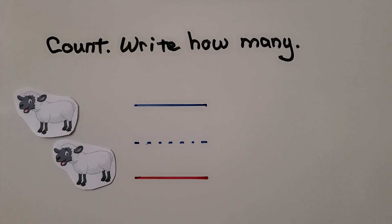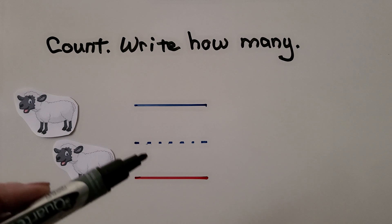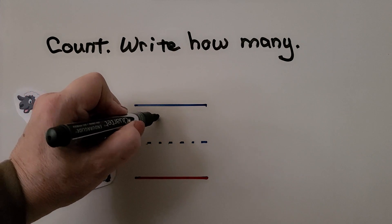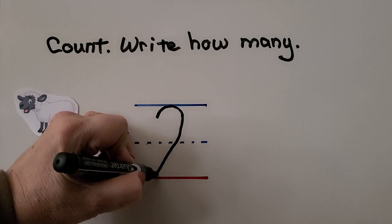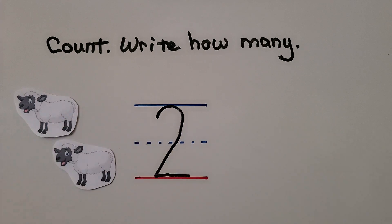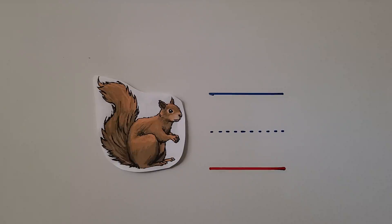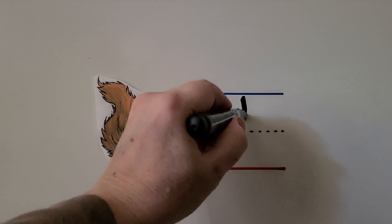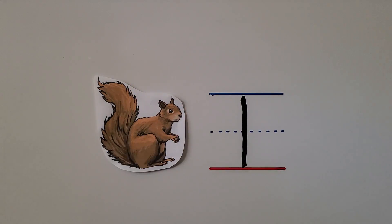We need to count how many there are and write the number on the line. I see one, two sheep — we write the number two: start here, curve around, come down on a slant, and go across on the line. Two sheep. I see a squirrel — there's only one squirrel. We write one: start up here and come straight down. One squirrel.